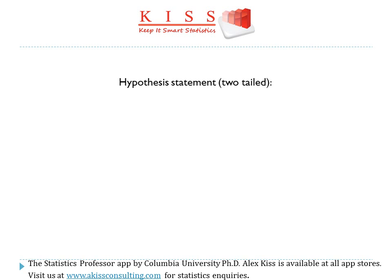The two-tailed hypothesis statement is as follows. H-naught, the null hypothesis, is mu — the mean — equals c, some constant. Whereas the alternate hypothesis, ha, is mu — the mean — does not equal c.